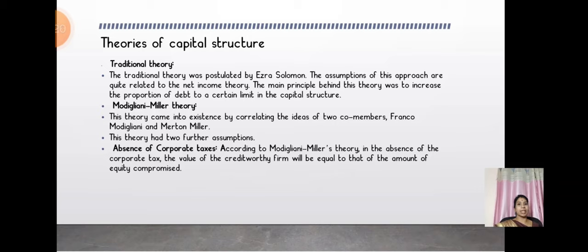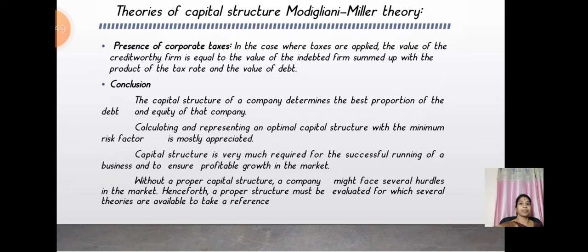The Modigliani-Miller Theory is the final and very famous theory. It came into existence from the combined ideas of Franco Modigliani and Merton Miller. This theory has two further assumptions: absence of corporate tax and presence of corporate tax. Under absence of corporate tax, the value of a creditworthy firm equals the amount of equity. Under presence of corporate tax, the value of the creditworthy firm equals the value of the unlevered firm plus the product of the tax rate and the value of debt.